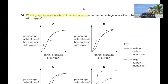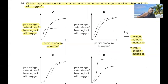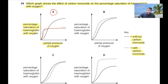Question 34: Which graph shows the effect of carbon monoxide on percentage saturation of haemoglobin with oxygen? With carbon monoxide, haemoglobin loses its ability to carry oxygen, so the graph should show lower saturation with CO present. Options B and D show higher saturation with CO, and C goes to 100% which is not possible. Option A is correct.